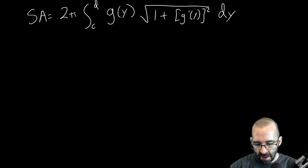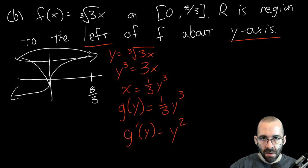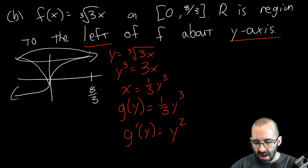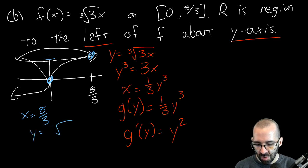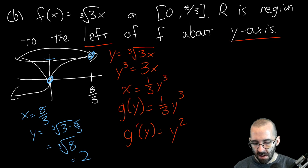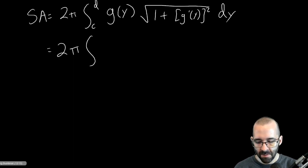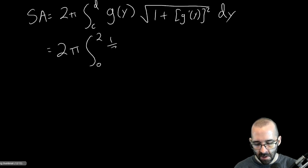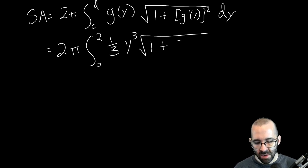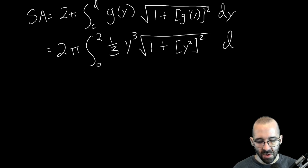Now we need to find the y-bounds. x goes from 0 to 8/3, so when x = 8/3, y = ∛(3 · 8/3) = ∛8 = 2. So y goes from 0 to 2. Plugging into the formula SA = 2π ∫₀² g(y) √(1 + [g'(y)]²) dy, we get 2π times the integral from 0 to 2 of (1/3)y³ times √(1 + y⁴) dy.